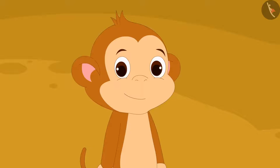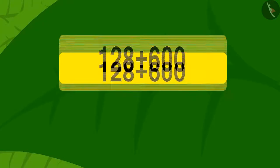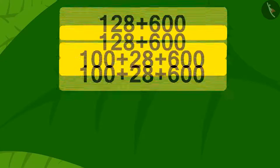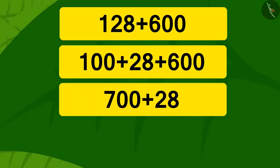Children, can you find an easy way to solve this puzzle quickly? Come, let's do it together. We can write 128 as the addition of two numbers: 28 and 100. Now with the same process we just learned, we can write 700 by adding 100 and 600. Now it's very easy. If you add 28 to 700, you get 728.